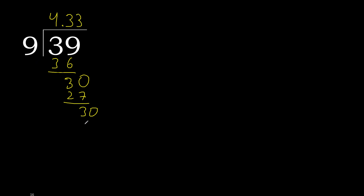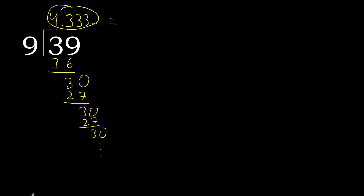9 multiplied by 3 again, and the remainder repeats. Therefore the digit 3 repeats. So 39 divided by 9 gives 4.3 repeating — the 3 after the decimal point repeats like this.